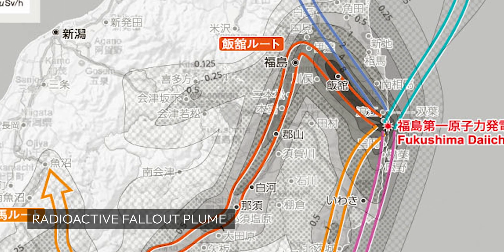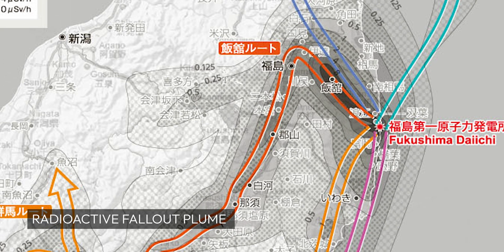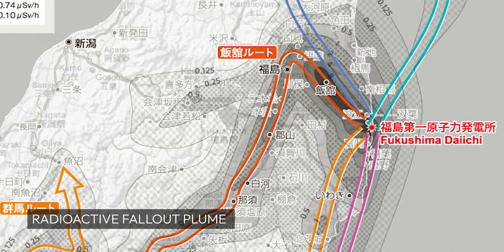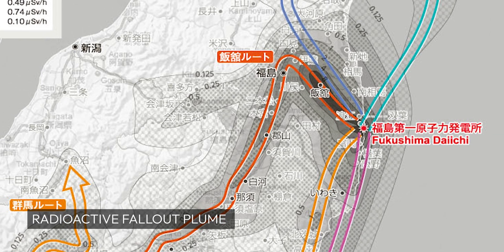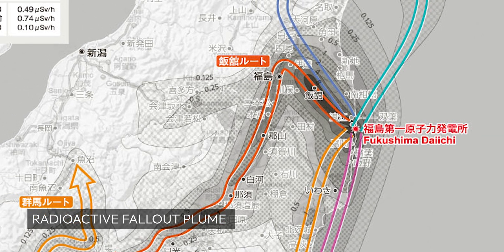Following the reactor meltdowns, 160,000 people from the surrounding areas were required to be evacuated. One year later, radioactive debris from the Fukushima tsunami washed upon the shores of California, showing the reach of these disasters.